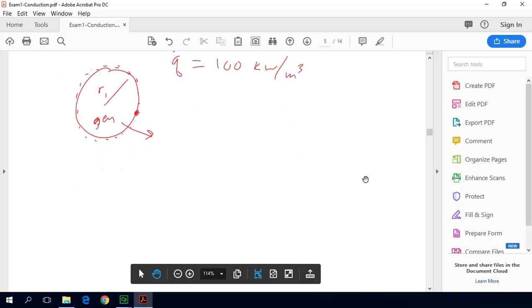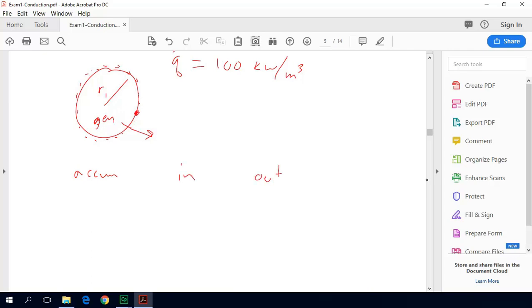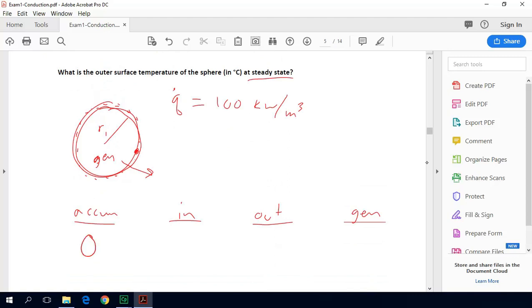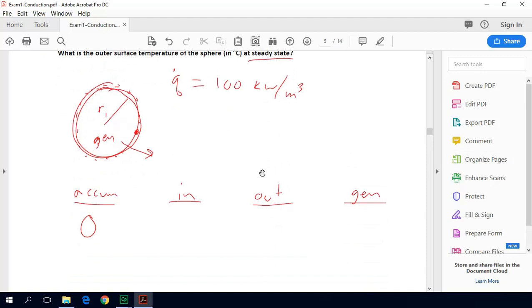So we can set up an energy balance. We have our accumulation term, our in term, our out term, and our generation term. We're doing our energy balance just on the sphere itself. In terms of accumulation, the problem is at steady state, so nothing is being accumulated or changing with respect to time.